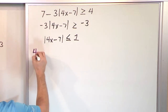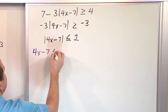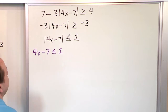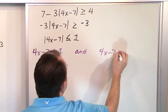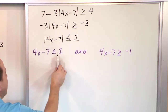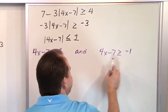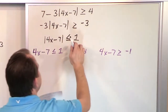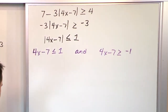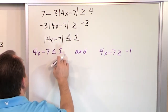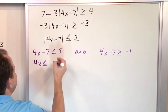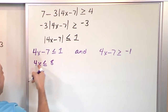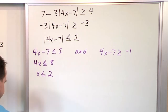So breaking it out: 4x minus 7 less than or equal to 1, and 4x minus 7 greater than or equal to negative 1. This means it's going to be less than 1 and greater than negative 1, bounding it to one distance unit away. Then we move the 7 over by adding it: 4x less than or equal to 1 plus 7 which is 8. What is 8 divided by 4? That's 2. So x is less than or equal to 2.